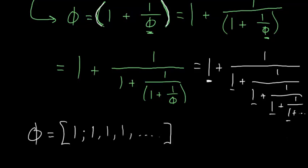Because no integers greater than 1 appear in this continued fraction expression for phi, phi is considered to be one of the most difficult numbers to approximate with rational numbers. Because of this, it's often considered to be the most irrational of all numbers.